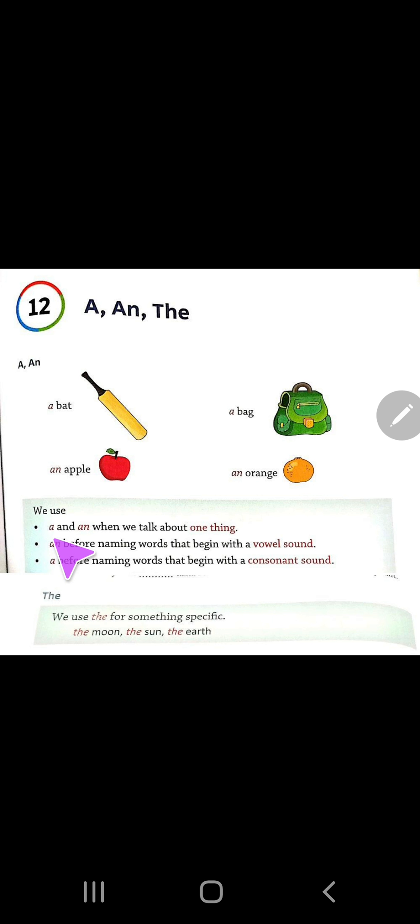We use A and An when we talk about one thing. Students, abse pahla important point hai. Jab bhi hum kisi single chiz ke liye baare mein baat karte hai, to humi A aur An ka use karte hai. One thing very important you have to remember. An before naming words that begin with a vowel sound. Aur An ka hain pere use hota hai? Jahaan pere vowel sound hota hai. Toh vowels kawun kawun se hota hai students?